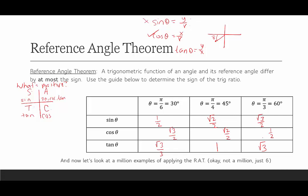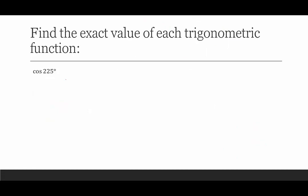We're ready now. We're going to look at six examples of the reference angle theorem. Remember: a trig function of an angle and its reference angle differ by at most the sign — it's either equal to the reference angle value or the negative of it. Here's our first example: cosine of 225°. We want to know where 225° terminates. Filling in the coordinate plane with 0°, 90°, 180°, 270°, we see 225° is between 180° and 270°, so it terminates in quadrant 3.